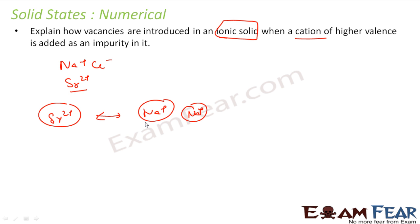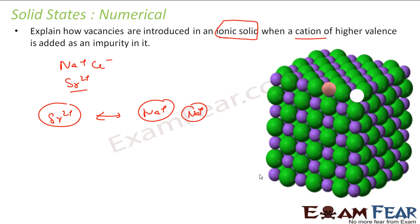So one Sr2+ will kick out two Na+ molecules, but since it can occupy only one space, one space will be vacant. So that is how it will be. This is my NaCl. Two of my Na+ went out, but only one is occupied by Sr2+. Only one of the places is occupied, the other place is vacant.